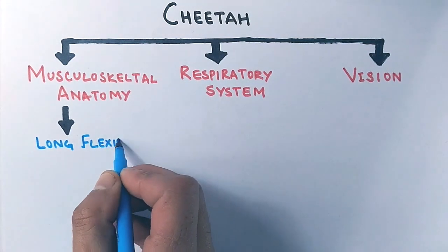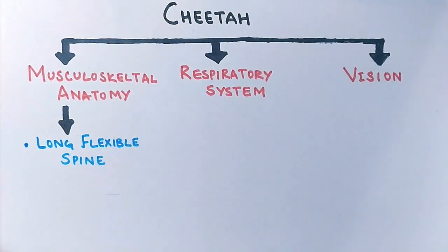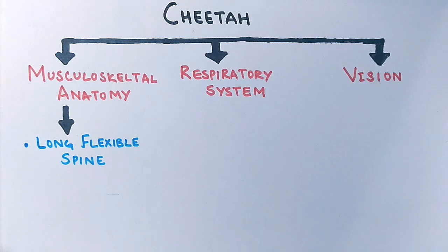In the musculoskeletal system, the first thing we see is that the cheetah has a long, flexible spine. The spine of the cheetah is proportionally the longest and most flexible of any large cat species. This spine is important while sprinting — it flexes like a spring and provides propulsive forces. With this, a cheetah can achieve seven-meter strides at times and remains almost half the time in the air during its run.